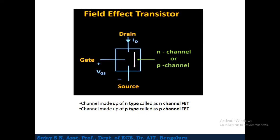In Field Effect Transistors there are two types: N-channel FET and P-channel FET. When the channel is made up of N-type material, it is called N-channel FET. When the channel is made up of P-type material, it is called P-channel FET. The channel is the region through which current flows — the region between drain and source.